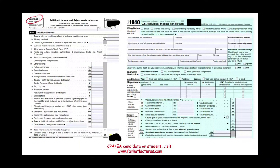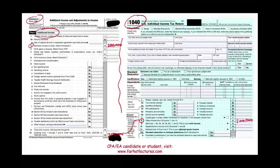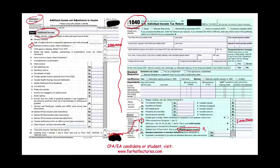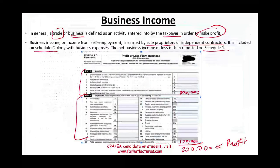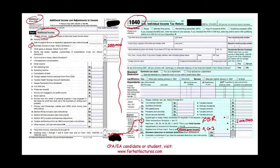That $200,000 net profit is reported on Schedule 1, Line 3. You add up all your business income — for illustration, assume that's your only additional income, so your total is $200,000. This transfers to your Form 1040. An important point: notice we have Adjusted Gross Income (AGI) below. Any business deduction you take is considered 'for AGI,' meaning it's taken before you arrive at AGI.